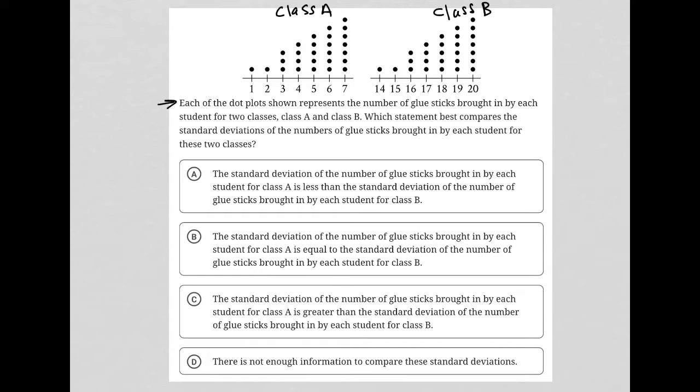The question says, each of the dot plots shown represents the number of glue sticks brought in by each student for two classes, Class A and Class B. Which statement best compares the standard deviations of the numbers of glue sticks brought in by each student for these two classes?